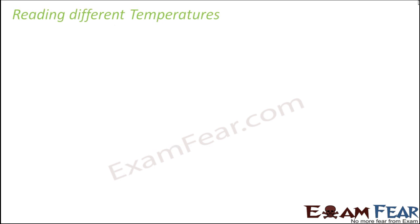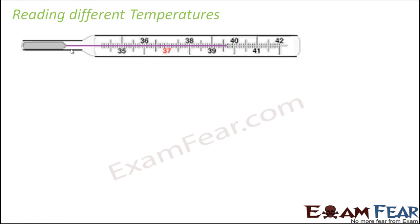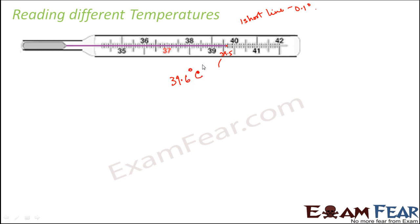Let us now try reading some different temperatures. The purple-colored line represents the mercury level. Here the mercury level reaches a point: 39 is here, 39.5 is here, and there is just one more short line past 39.5. Since one short line is 0.1 degree, this gives 39.5 plus 0.1, which equals 39.6 degrees Celsius.